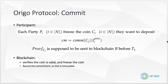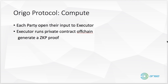So in summary, commit requires participants to prove via zero-knowledge proof that they have enough money, and also commit a commitment so their input is recorded immutably on the blockchain. Now the compute stage — after all participants commit, it moves to the second stage. Each party opens their inputs to the executor so the executor can actually run the contract. Opening means sending the data to the executor. The executor runs the contract off-chain and generates a ZK proof back on-chain.